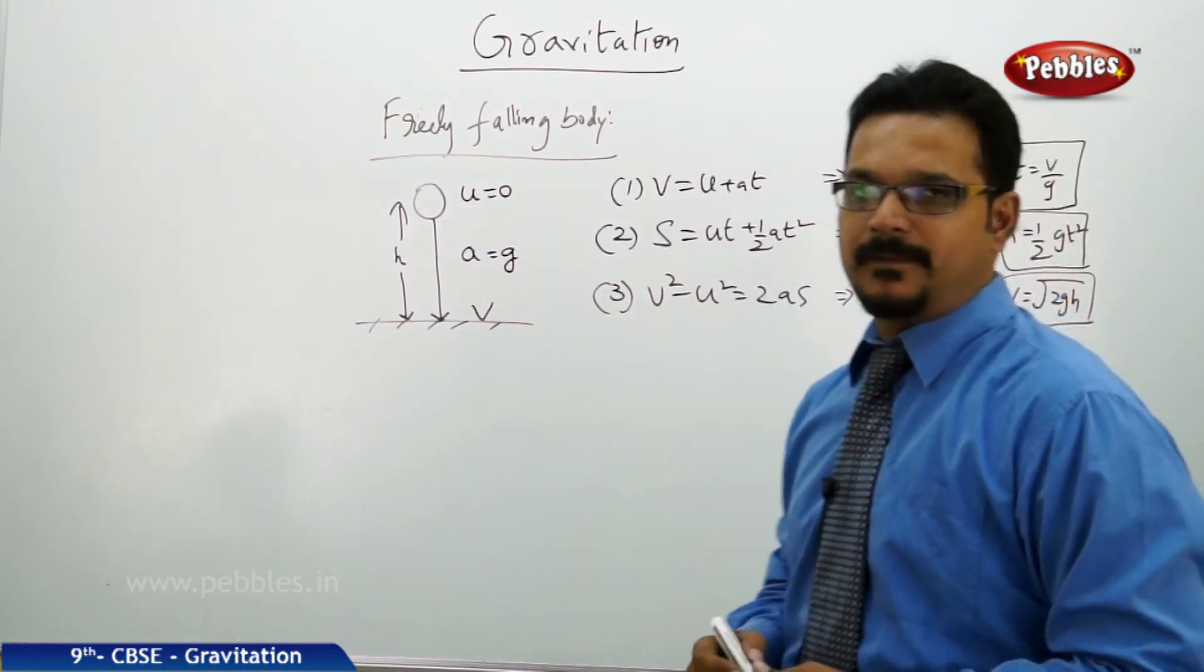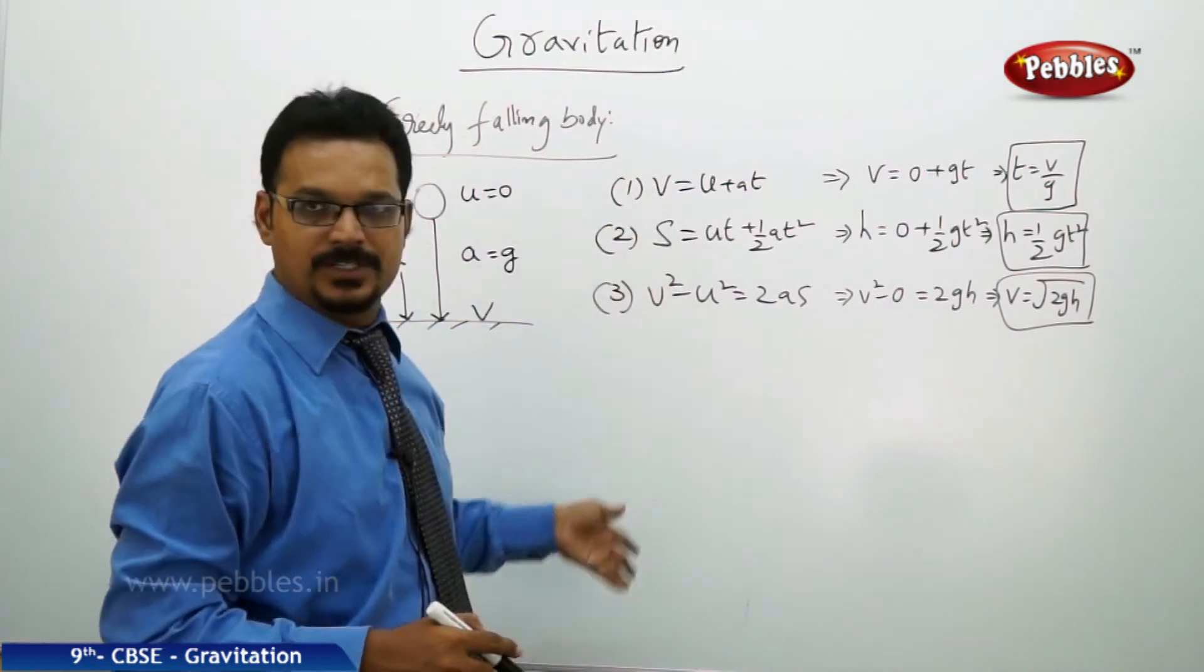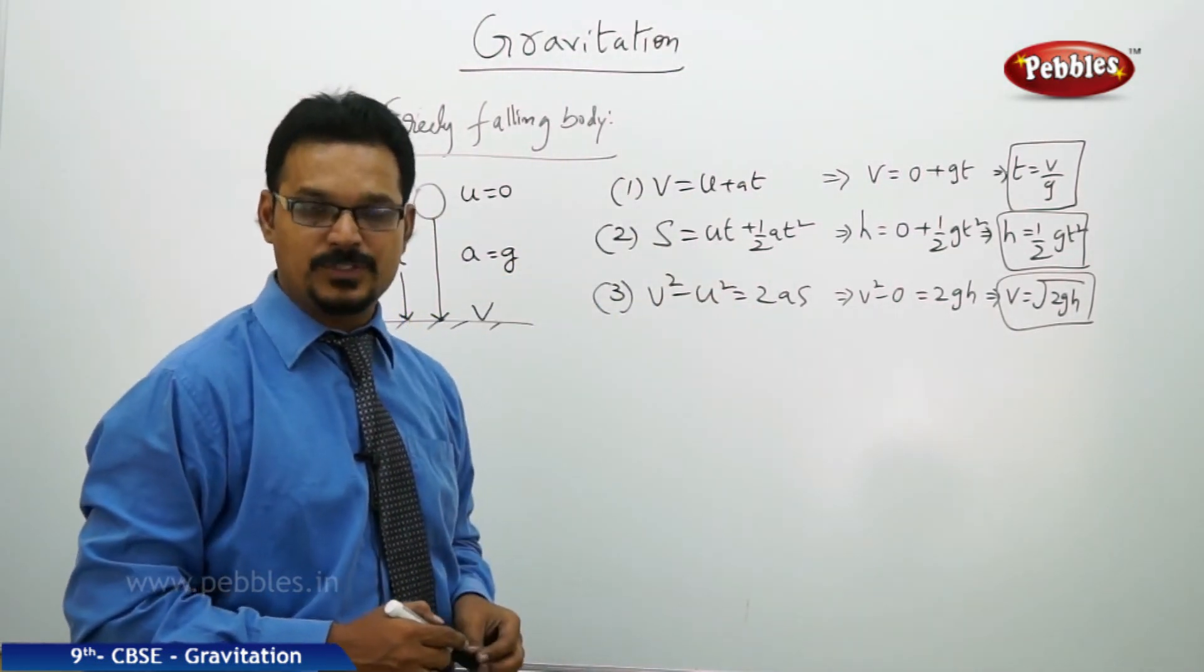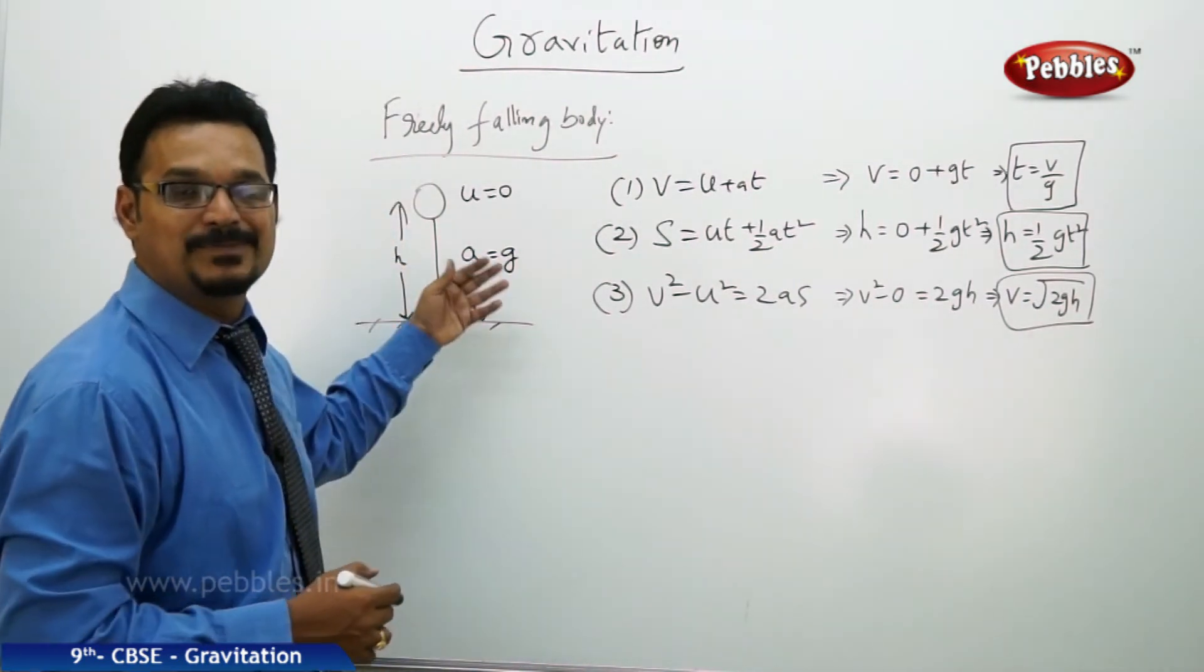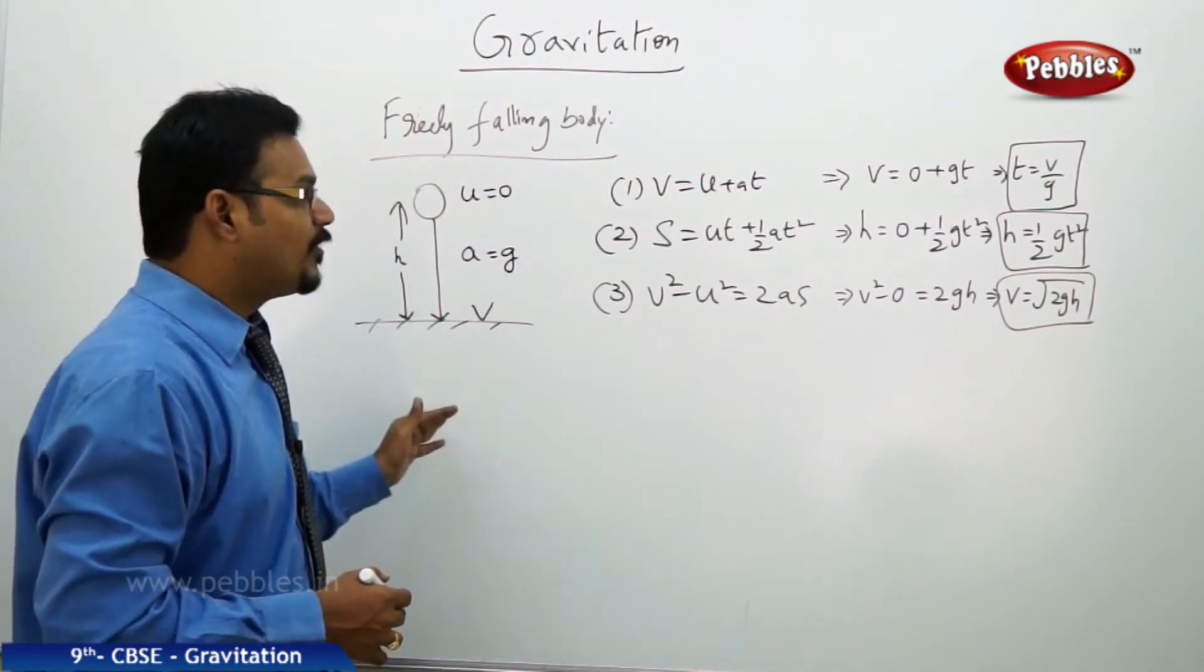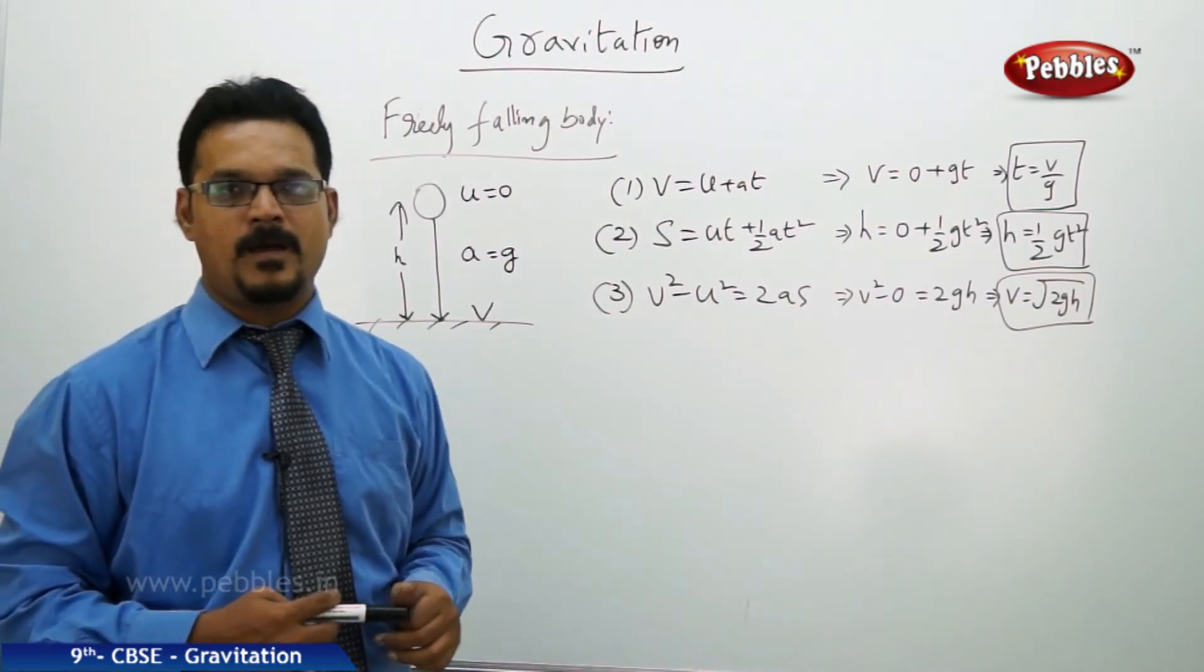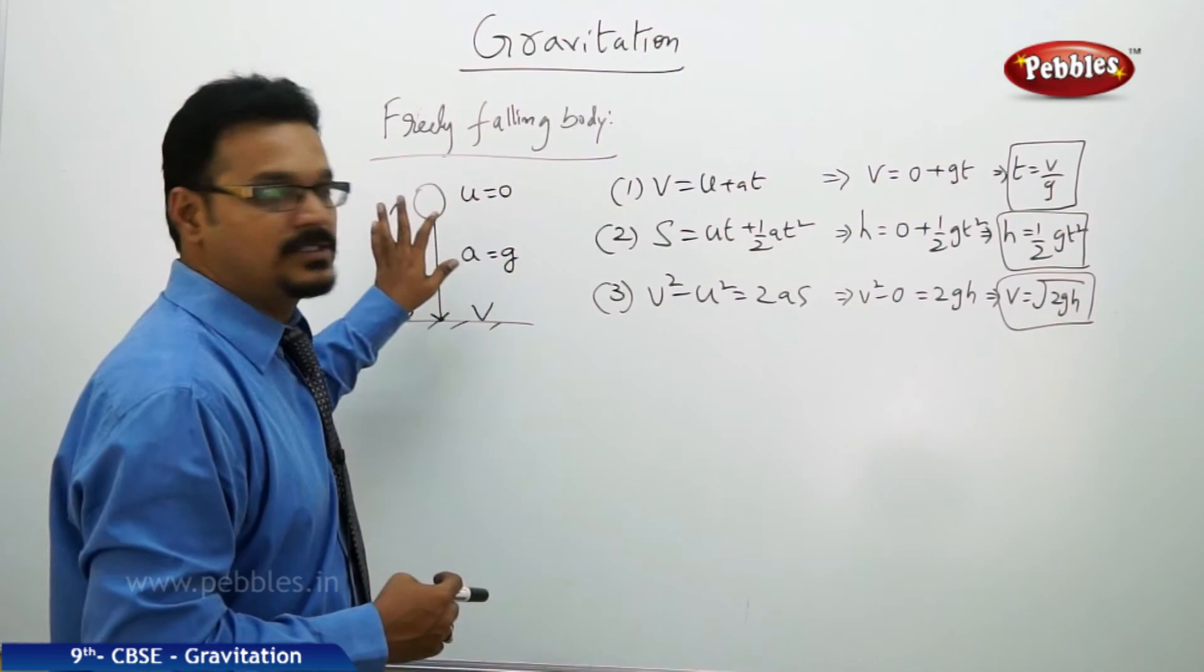If you see, we have just applied these conditions to these three equations and we got three different formulas. And this is very much useful when you want to calculate speed of the body, initial speed, final speed, time taken in freely falling body cases. So let us see how can we apply these formulas to solve numericals in this case.